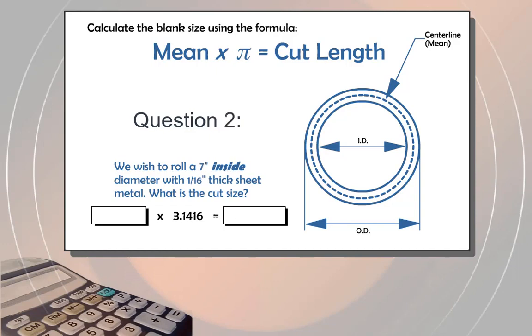Question 2. We wish to roll a 7-inch inside diameter with 1/16-inch thick sheet metal. What is the cut size? The mean is 7.062 and the answer is 22.187.